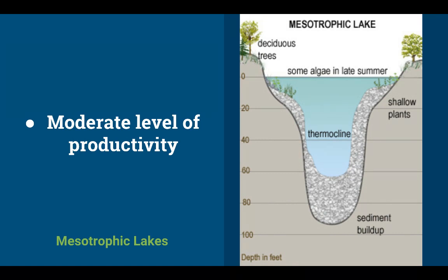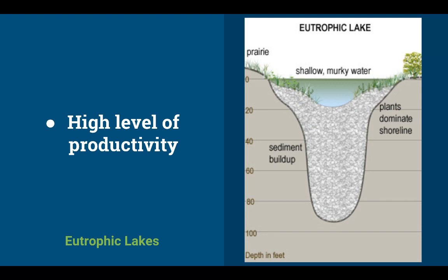Mesotrophic lakes have a moderate level of productivity — you might get some algae in late summer, they might freeze in winter, and there's some plant life allowing for some life, but not a lot. The most abundant productivity comes from eutrophic lakes. You can see sediment allowing plants to root and grow, plants all around the shoreline, which allows for many different organisms and animals to coexist.